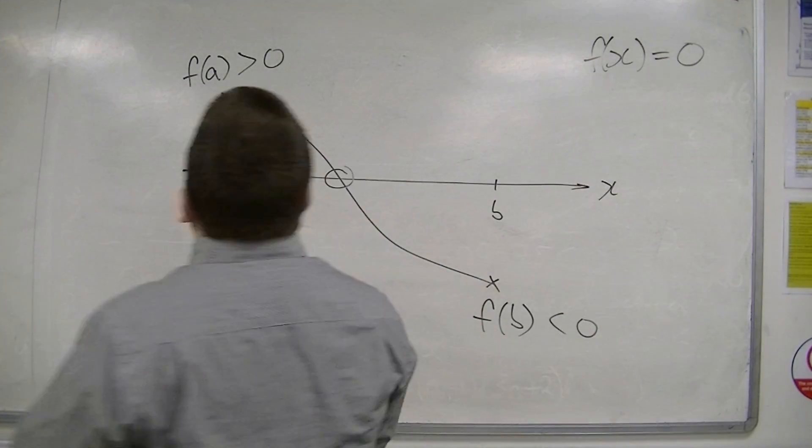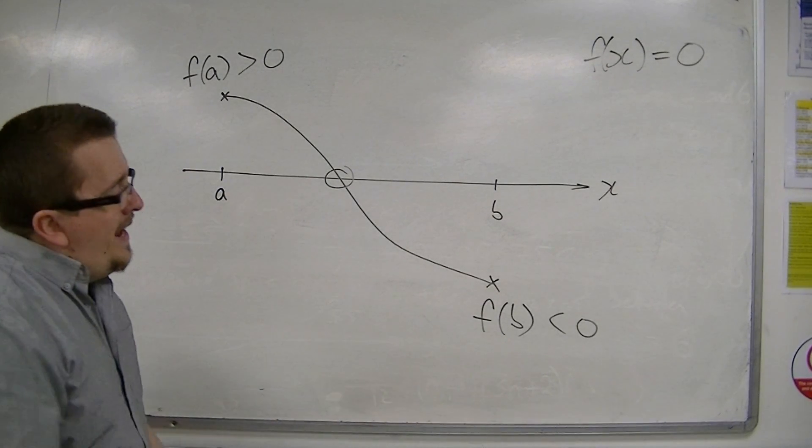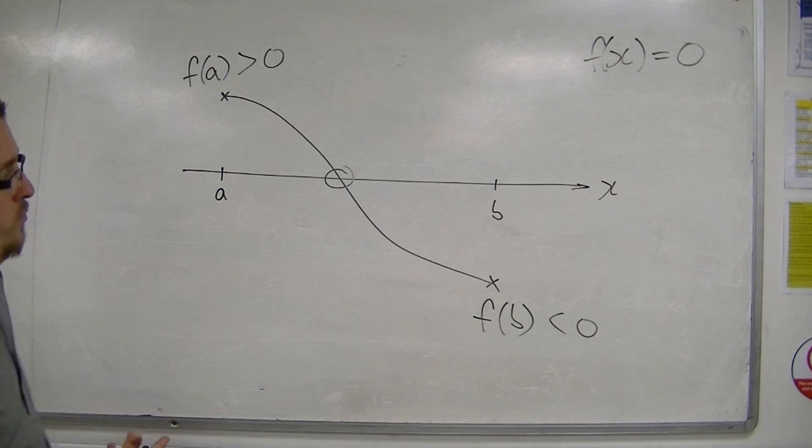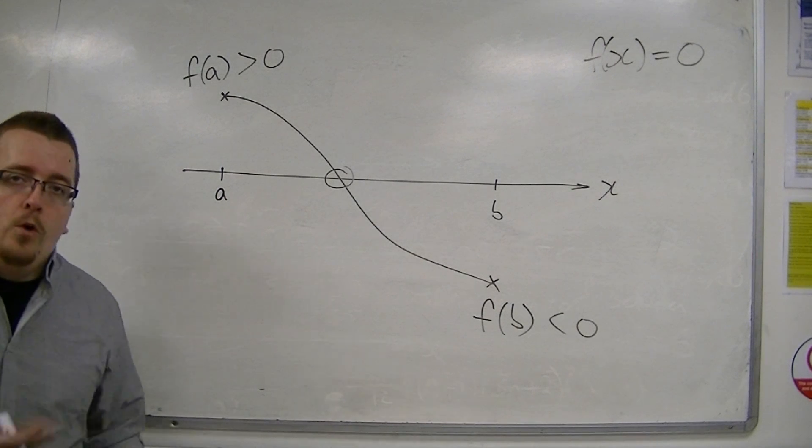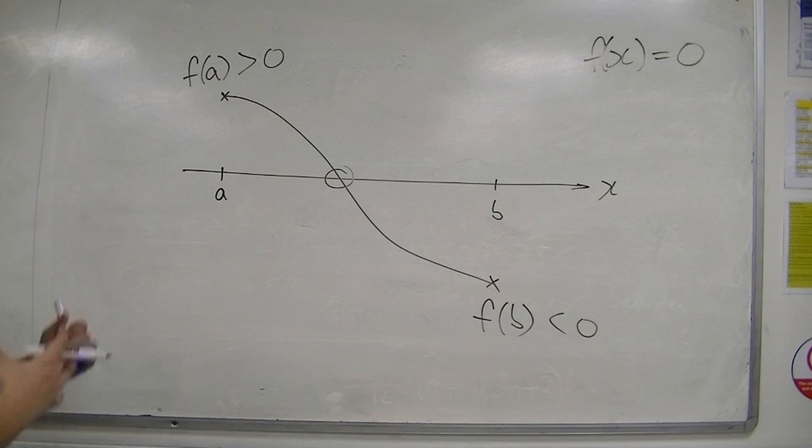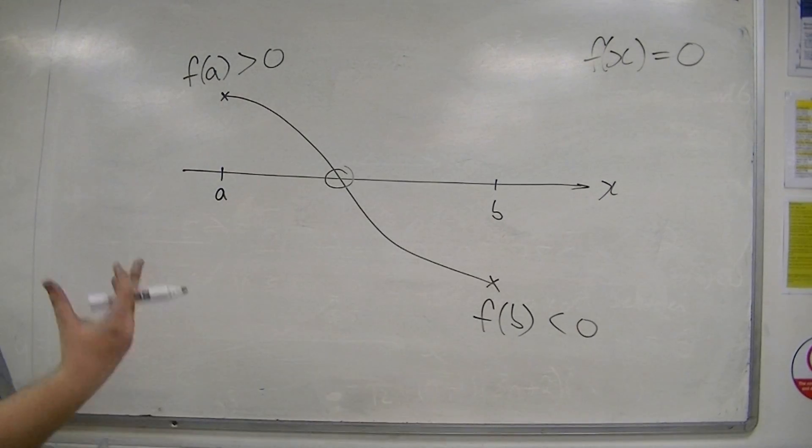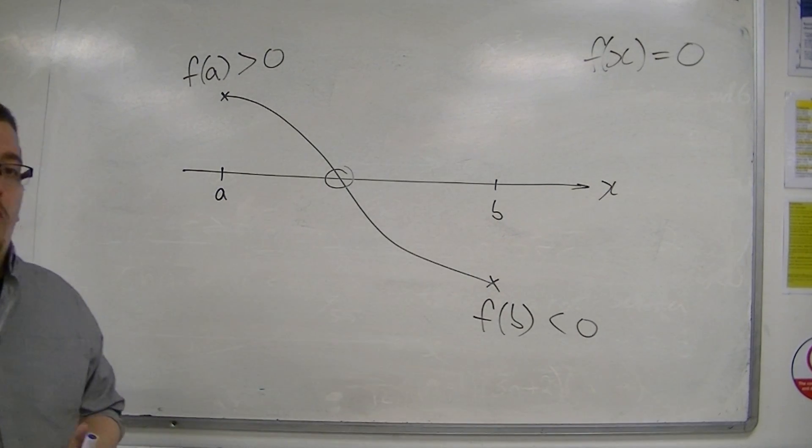Now, it's all well and good, me knowing that it's between a and b, but if I want an accurate answer to this problem, then this really isn't giving it to me. All it's saying is that it's between these two values, a and b, and these could be like 3 and 4, for example. If I want a more accurate answer, I'm going to have to do a little bit more work.